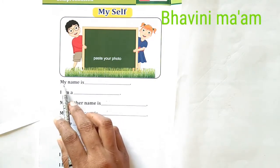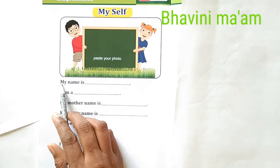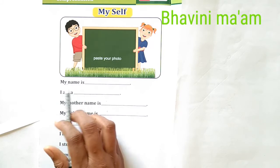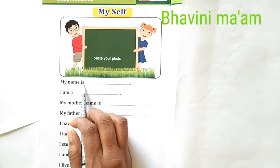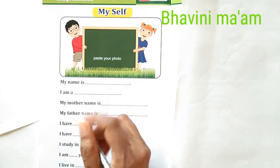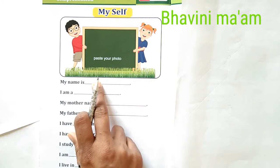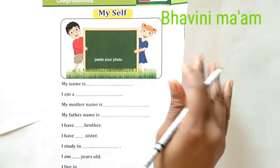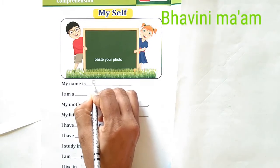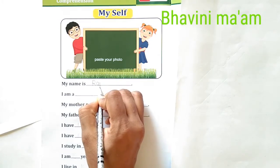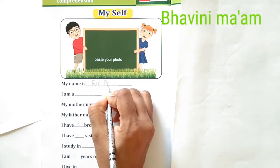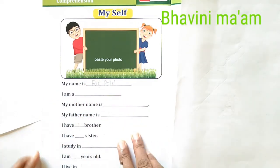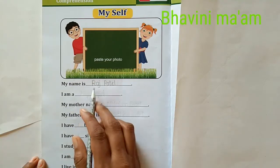Your first sentence — read with me everyone. M-Y-N-A-M-E, My Name. My name is — here we have to write our own name. I will write another name here as an example. My name is Raj Patel. Okay, Raj Patel.